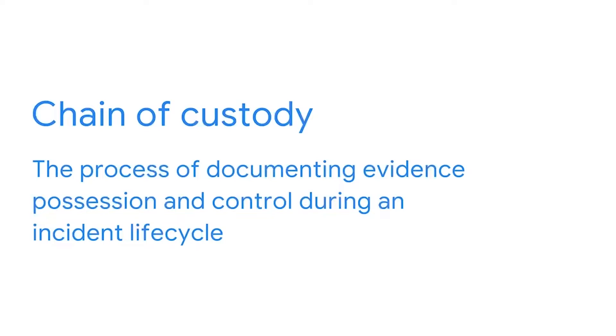Let's continue our discussion on how documentation provides transparency through documents like chain of custody. During incident response, evidence must be accounted for during the entire incident's life cycle. Tracking evidence is important if the evidence is requested as part of any legal proceedings. Security teams use a form called chain of custody — the process of documenting evidence possession and control during an incident life cycle. As soon as evidence gets collected, chain of custody forms are introduced and filled out with details as the evidence is handled.